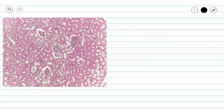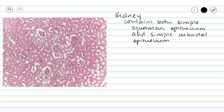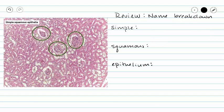This is a histological section of our kidney. As we slice through our kidney, we see lots of open spaces, and we're not just seeing simple squamous epithelium — we're also seeing simple cuboidal epithelium. What we need to focus on are these three or four areas here. What we're looking at is a group of blood vessels called the glomerulus. Then we have a space, and lining this space we have simple squamous epithelium.